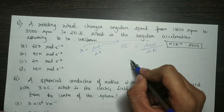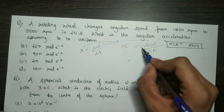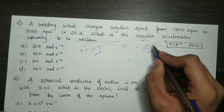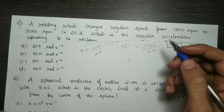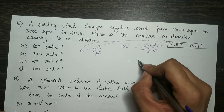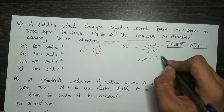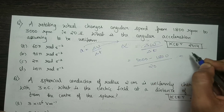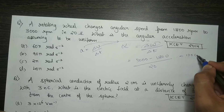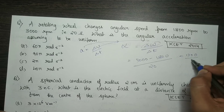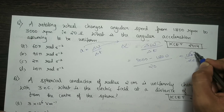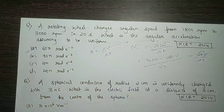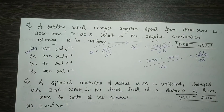This is the change in omega. Omega final minus omega initial: 3000 minus 1800 divided by 20. That gives 1200 divided by 20, which equals 60. The answer is 60 — but there is a pi involved, there is a reason for pi.